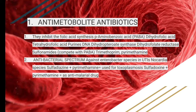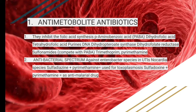Sulfonamides have structural similarity with PABA, so they compete with PABA. Examples of drugs in the sulfonamide classification include trimethoprim and pyrimethamine. The most important combinations from an antibacterial spectrum perspective are sulfadiazine and pyrimethamine, used for toxoplasmosis, and sulfadoxine and pyrimethamine, used as an anti-malarial drug. These two combinations for toxoplasmosis and malaria respectively are important from both the clinical and exam or interview point of view.